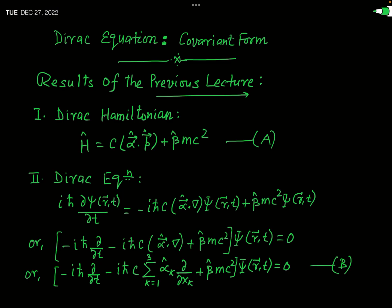For that, Dirac postulated that the Hamiltonian may be written as c times alpha dot p plus beta mc squared. Here alpha-hat and beta-hat are the operators used by Dirac in a historical pathway. In this equation the Hamiltonian is linearly dependent on the momentum vector, and by postulating this Hamiltonian the problem of the Klein-Gordon equation was overcome.